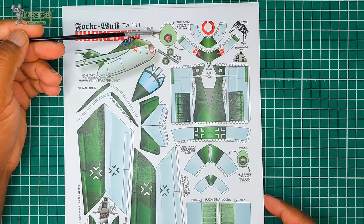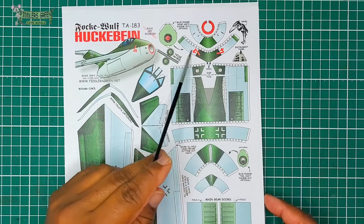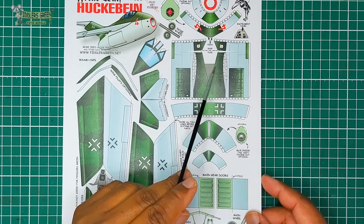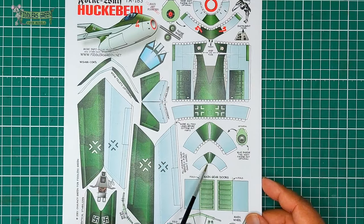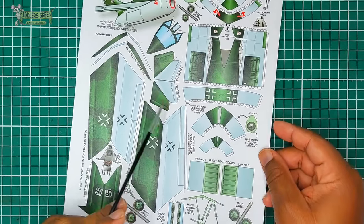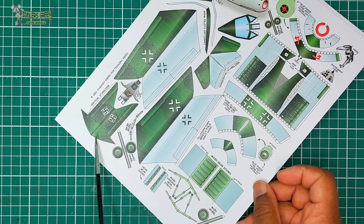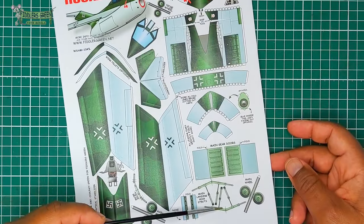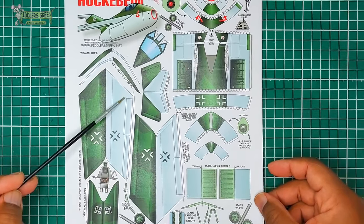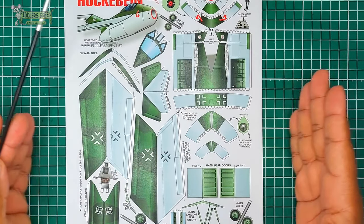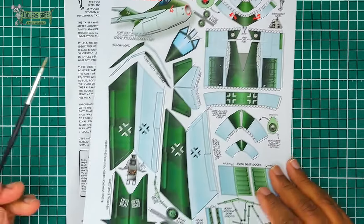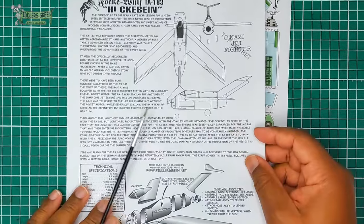We have the engine inlet, the nose, the main fuselage, the tail section, the main wings, the fin and rudder integrated. Here we have the landing gear and gear door bay. This looks pretty simple and straightforward. Well, let's hope it is.